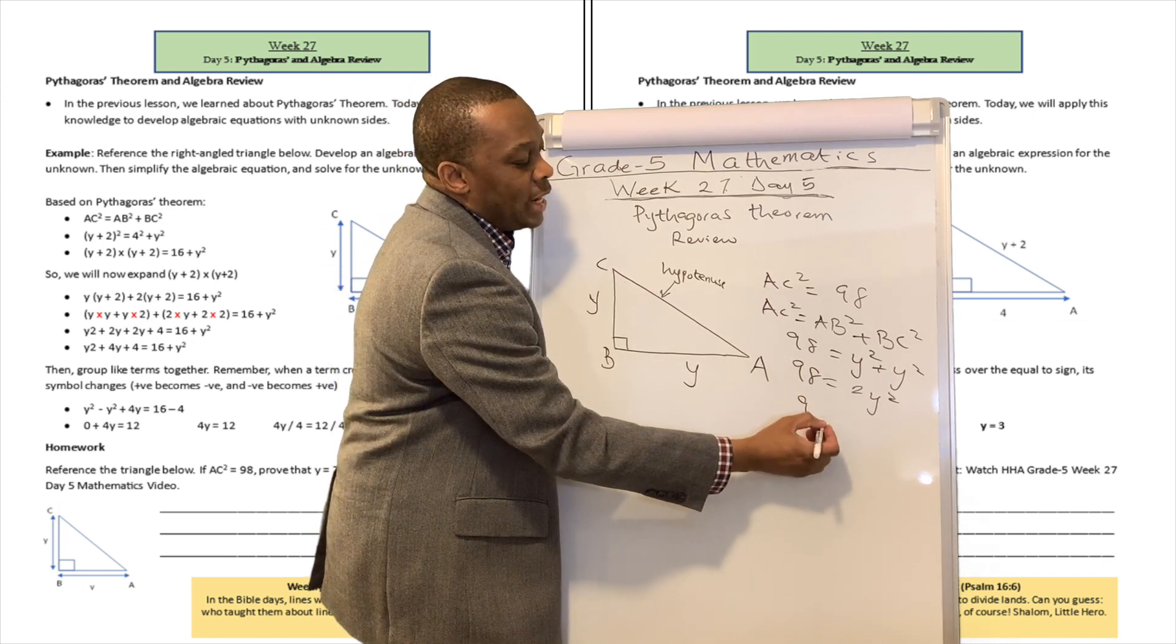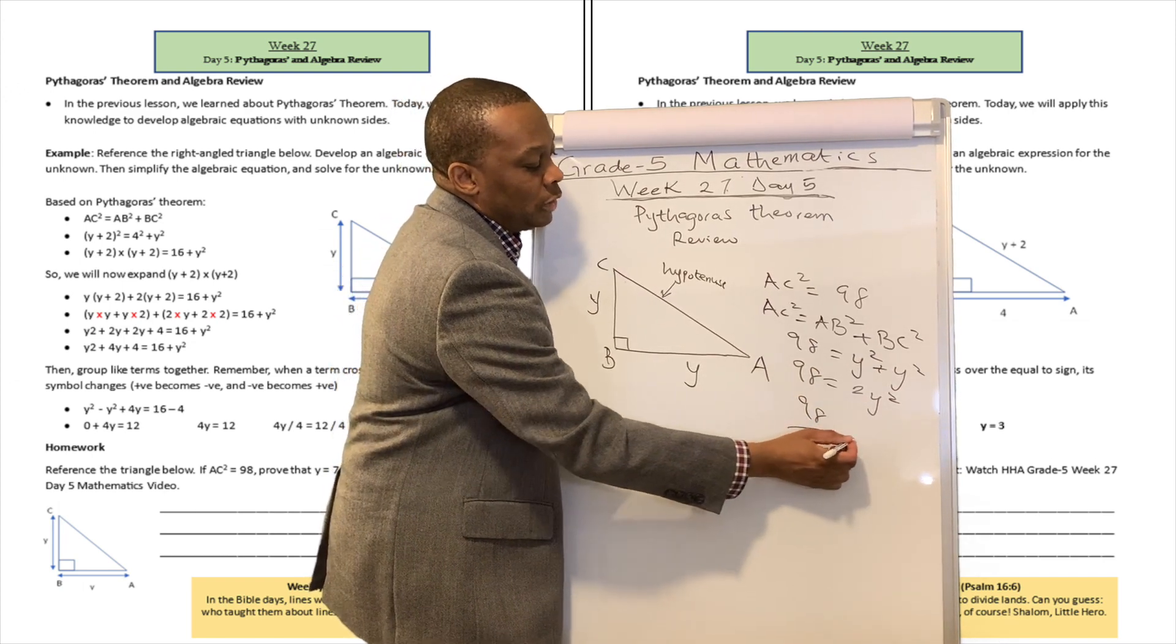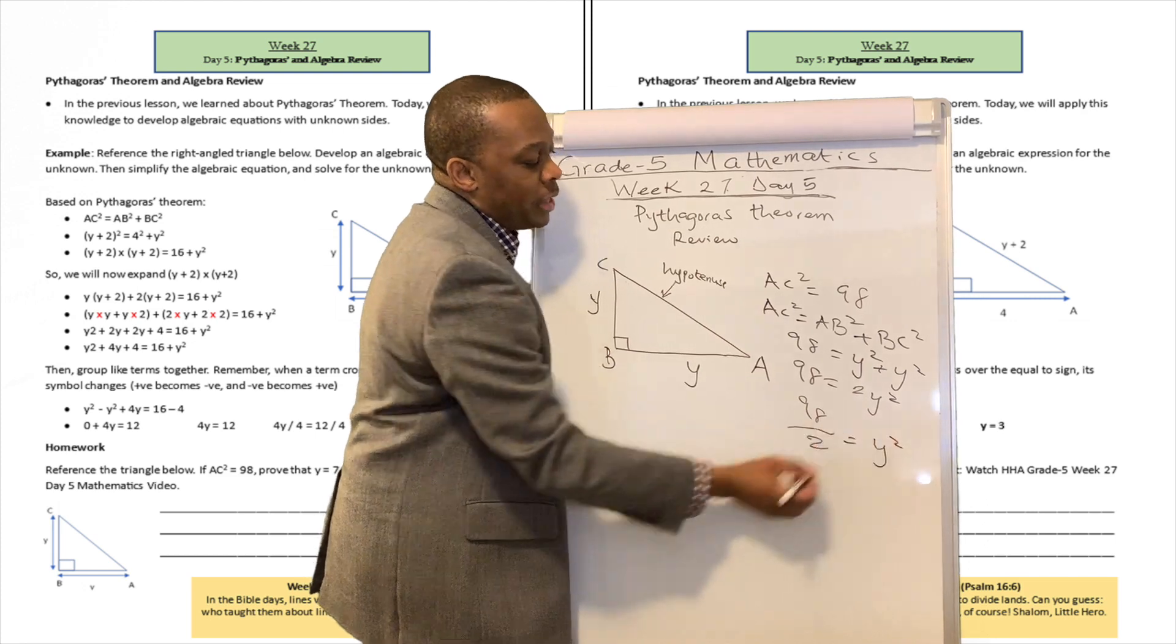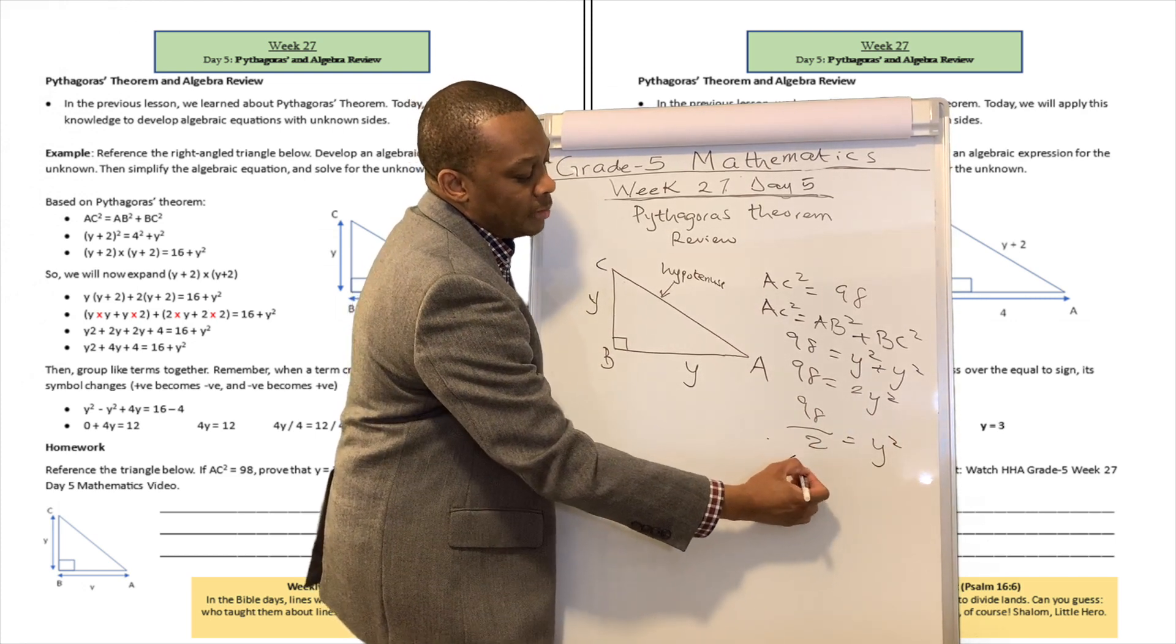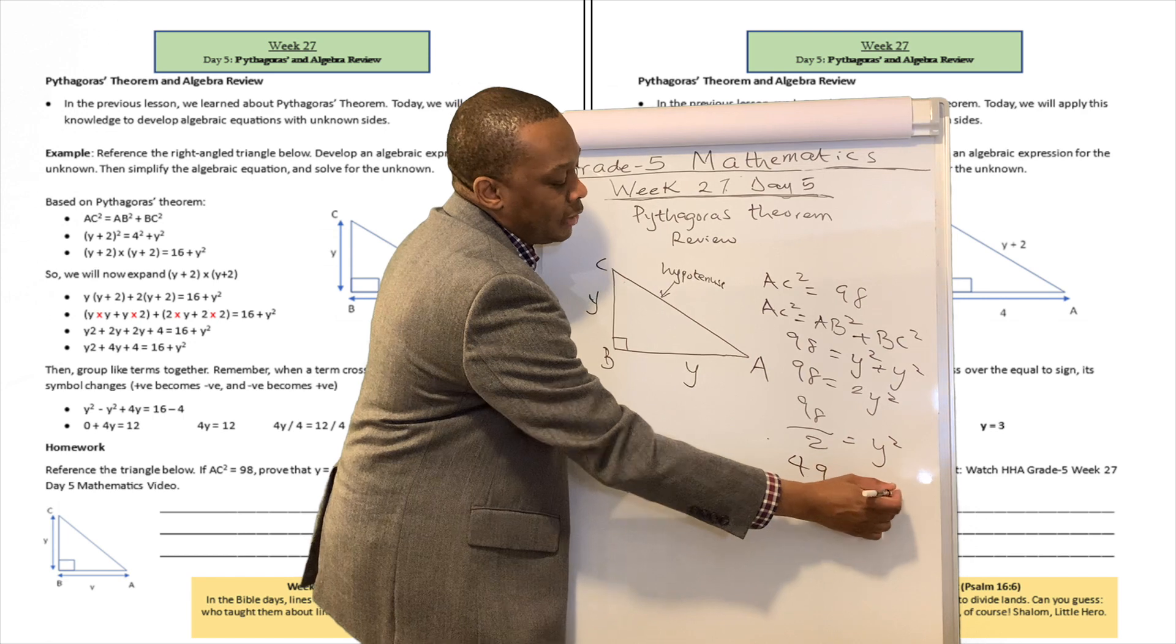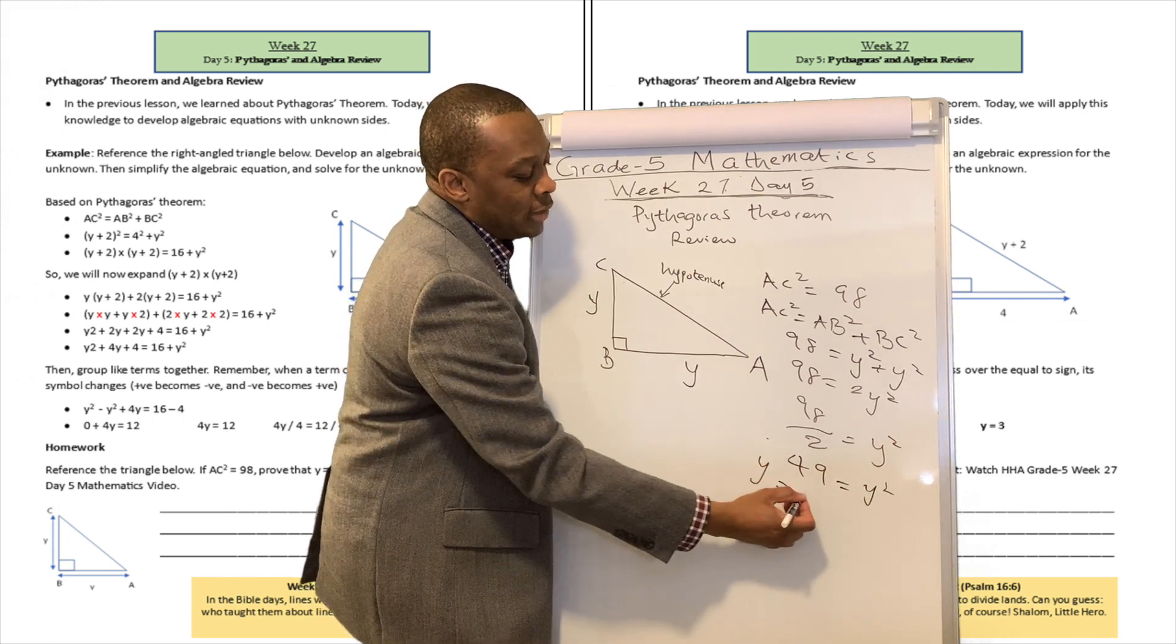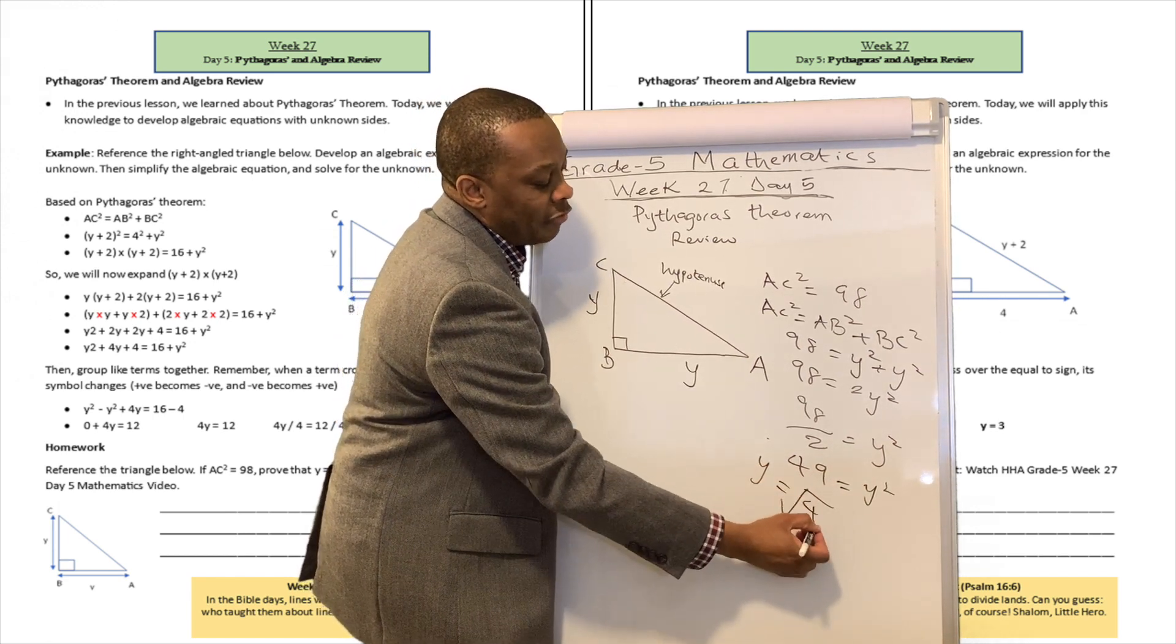So 98 divided by 2 is going to be equivalent to Y squared, and this is 49 equals Y squared. So Y is going to be the square root of 49.